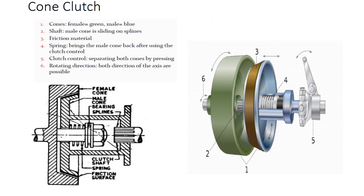Cone clutch: Here I have discussed the cone clutch, its working and schematic diagram. In this schematic diagram, the first cone is the female cone shown by green color. The second one is the blue cone, this is the male cone, and the male cone is sliding on splines.